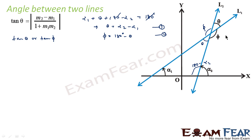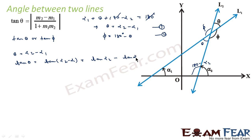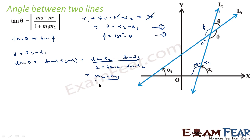Now we have to find tan theta and tan phi. From equation 1, theta equals alpha 2 minus alpha 1, so tan theta equals tan(alpha 2 minus alpha 1), which equals (tan alpha 2 minus tan alpha 1) by (1 plus tan alpha 1 times tan alpha 2). Now tan of alpha 2 is nothing but m2, the slope of line 2, and tan of alpha 1 is m1. So tan theta equals (m2 minus m1) by (1 plus m1 m2).